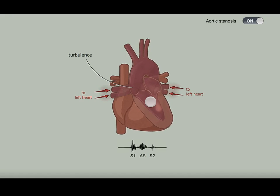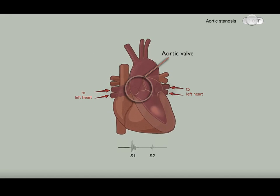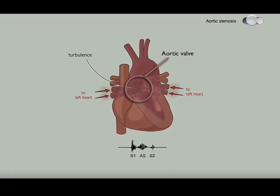Some things to watch here. First, look at the aortic valve and flip back and forth to compare to normal. You can see that the valve doesn't open as wide with stenosis.